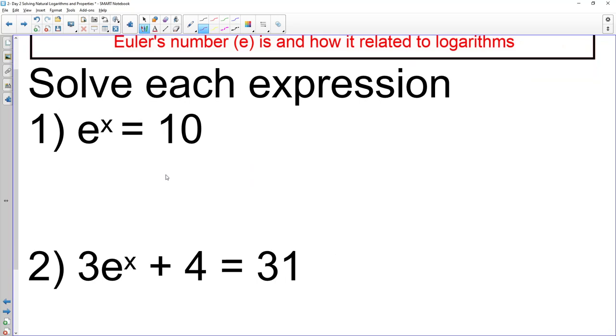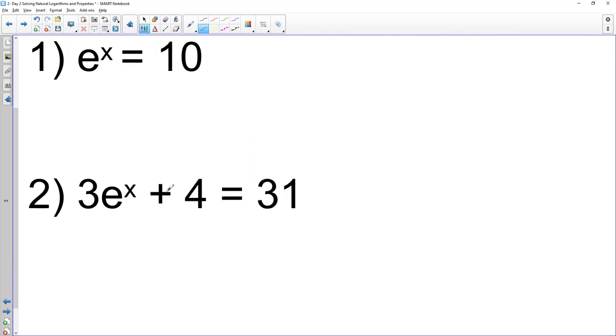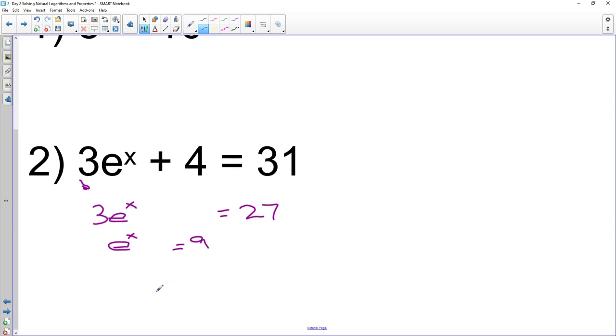If I were to ask you to solve something like this, here's what we're going to do. For this problem, 3e to the x, I'm going to subtract the 4 over, and that's going to be a 27. I'm going to divide both sides by 3, and it's going to say e to the x is equal to 9.